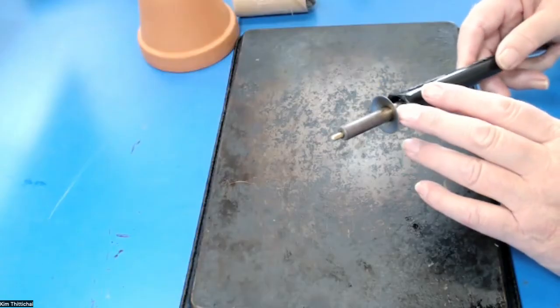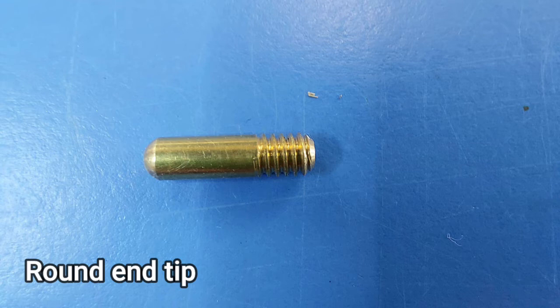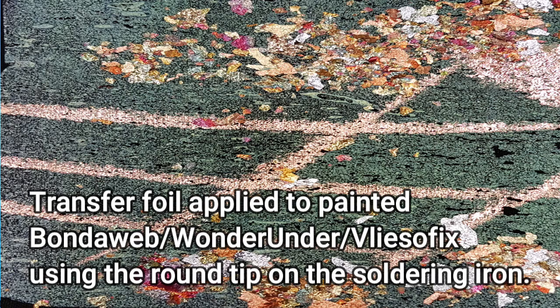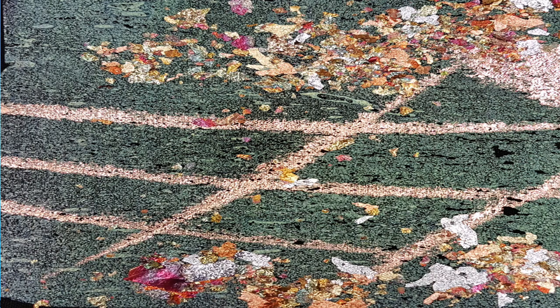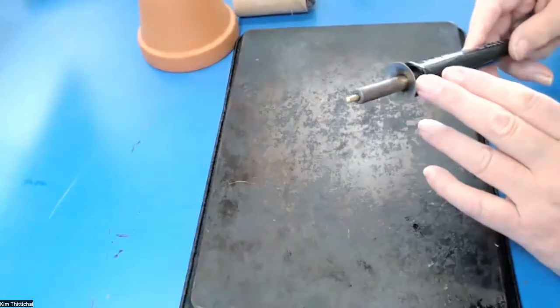This rounded tip on this particular soldering iron end is very useful for if you want to do some transfer foiling onto bonderweb, because some of the sharper points will actually cut through the foil and make a bit of a mess of it, whereas this lovely rounded end will just give you a lovely medium sized line.